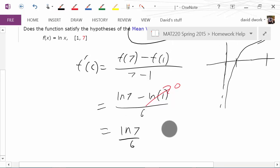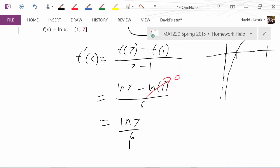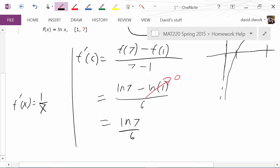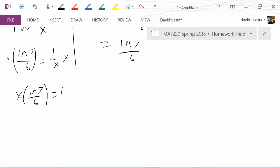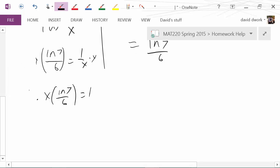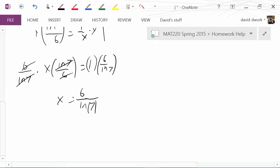Now the question is, what value of c will result in that slope? So therefore, I already kind of showed you, but my derivative function is equal to one over x. So the question is, what value of x results in this slope? What value of x results in natural log of seven divided by six? So now we just do a little bit of solving. I multiply both sides by x, which gives me x times natural log of seven divided by six equals one, and then I multiply the other way by six divided by natural log of seven. That divides with that, leaving me with x equals six over natural log of seven. And there you go, there's your value.